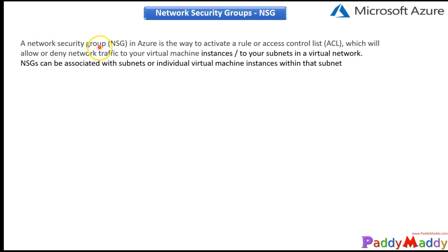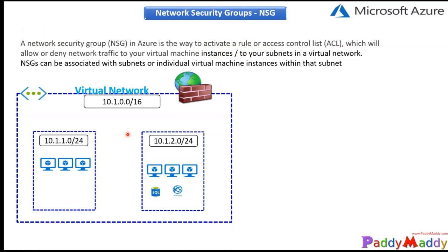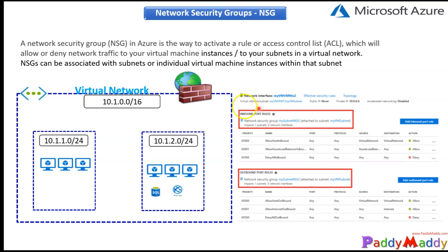With the Network Security Group in Microsoft Azure, you can create rules for inbound and outbound traffic. Only traffic that matches a rule will be allowed within your network. In other words, you are creating an access control list for both inbound and outbound traffic.